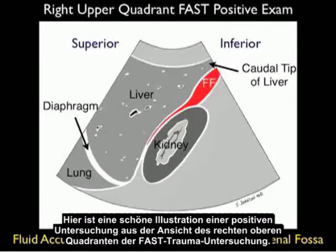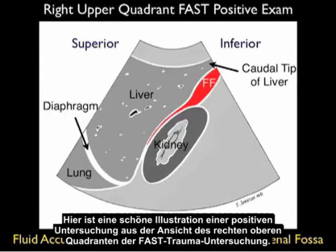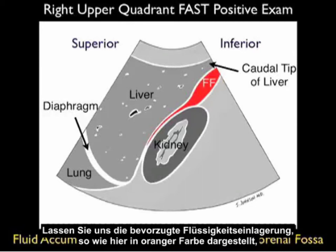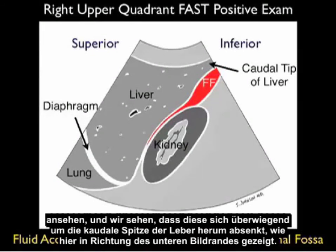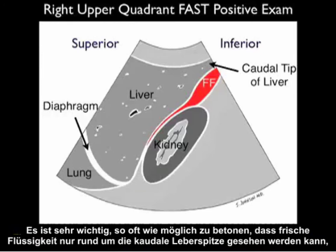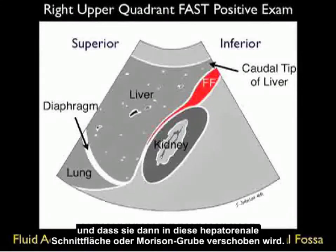Here's an illustration showing a positive examination from the Right Upper Quadrant View. We see the liver in the middle of the image and the kidney slightly posterior and inferior to the liver. Fluid, shown in orange, layers out predominantly around the caudal tip of the liver and flows into Morrison's pouch between the liver and the kidney. This is very important: fresh fluid can initially only be seen around the caudal tip, and then moves into the hepatorenal interface.